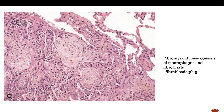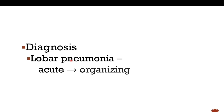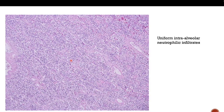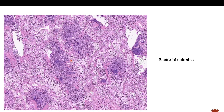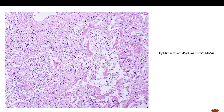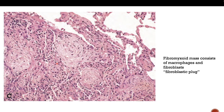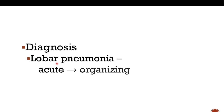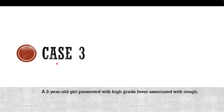This stage is called organizing pneumonia. The diagnosis is lobar pneumonia with a range of timeline stages: first the acute stage with distended alveolar spaces and neutrophilic infiltrates forming micro-abscesses with bacterial colonies; then worsening with hyaline membrane formation signifying early ARDS; and finally fibroblastic plug formation signifying organizing pneumonia.